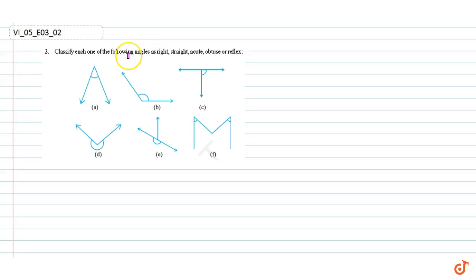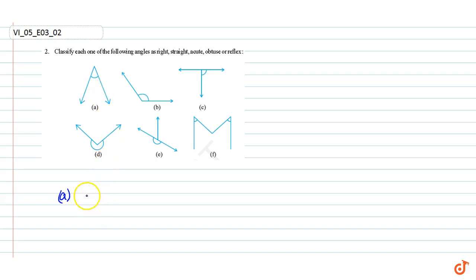In this question we have to classify each one of the following angles as right, straight, acute, obtuse, or reflex. Angle A: since the angle measures less than 90 degrees, it is an acute angle.